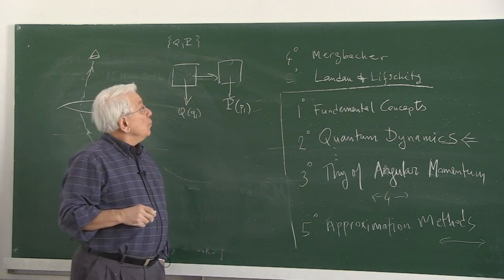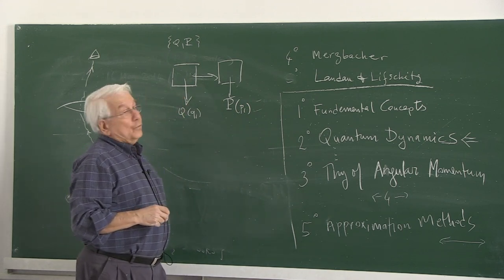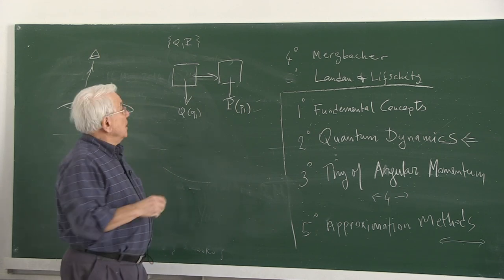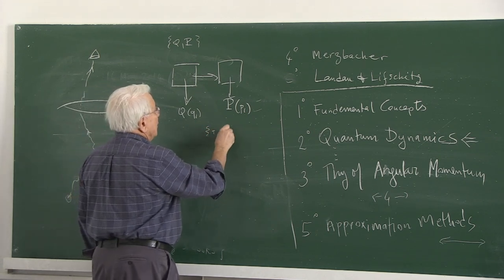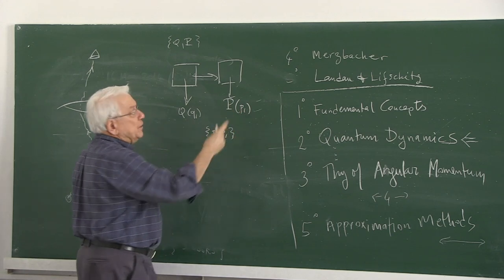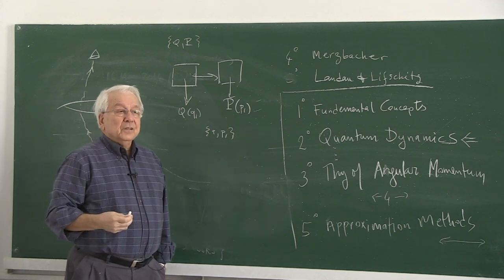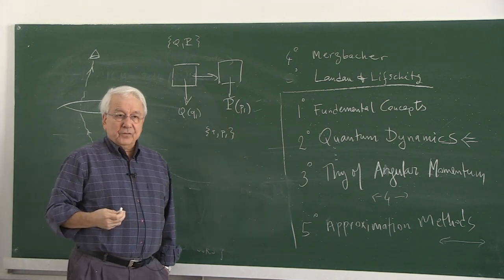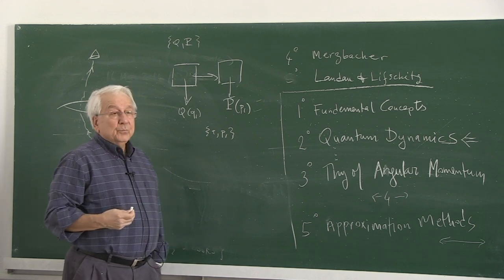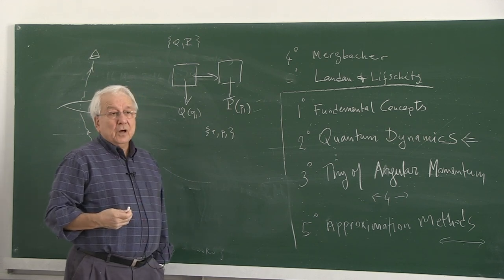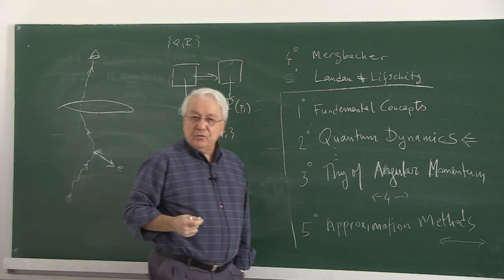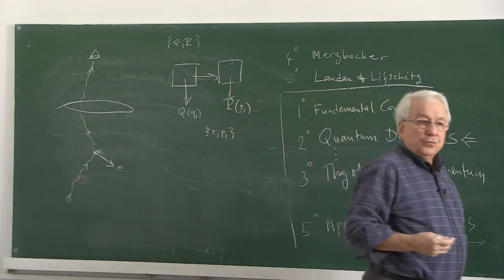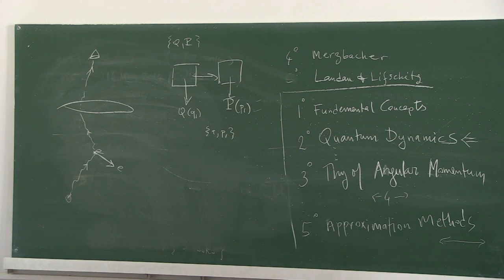But suppose after that I carried out a measurement of p and found p1. Question: what are the values of q and p? Can I say it is the q1 and p1 which I obtained from these two consecutive measurements? As I found q1 first and then p1 next, I might say the values of this q-p pair are q1 and p1.